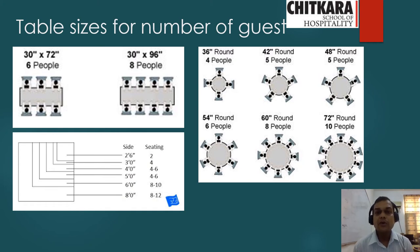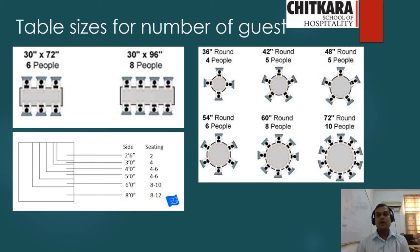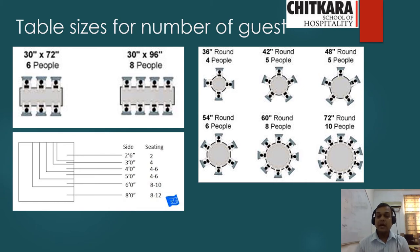Round tables have different diameters: a 36-inch diameter table seats 4; 42-inch diameter seats 5; 48-inch seats 5; 54-inch diameter seats 6; 60-inch diameter seats 8; and 72-inch diameter seats 10 people. The 8 and 10-person configurations are generally used in banquets. In restaurants, seating of 5 or 6 is more common, adding two or three round tables maximum to give a multi-dimensional effect.